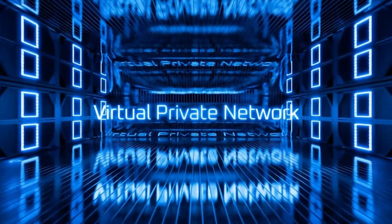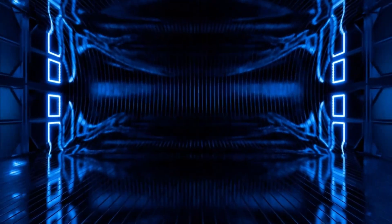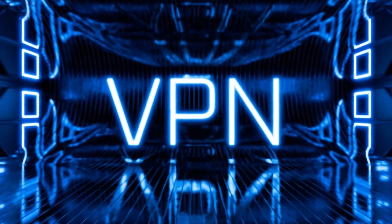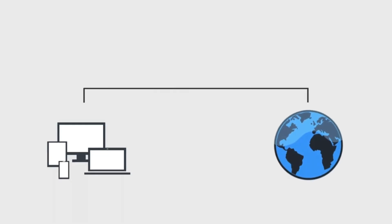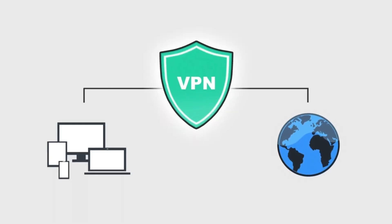By using a VPN, your online activity will bypass your ISP server and be redirected to another server, which is a VPN server. This means that your ISP or any other party can no longer see which websites you are visiting. The VPN server is now the source where all of your internet activity goes through.